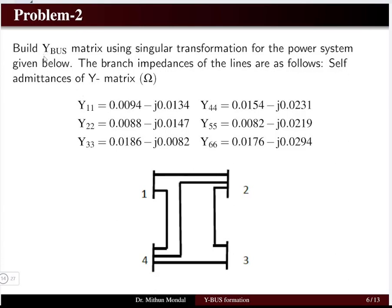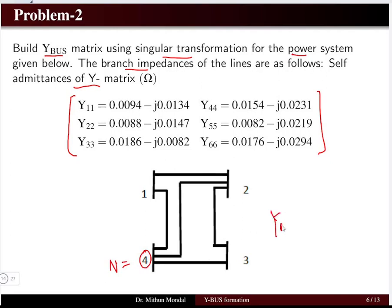The next problem requires building the Y bus matrix using singular transformation for a power system. The branch impedances and self-admittances Y11 through Y66 are given for six elements. This is a four-bus system, so n equals 4, and we need to create a 4×4 Y bus using the singular transformation, or tree-graph, method.